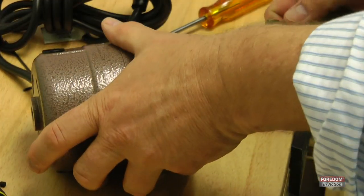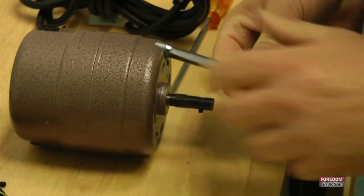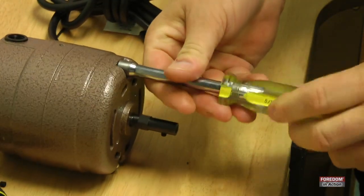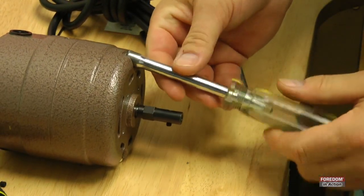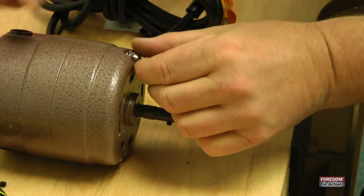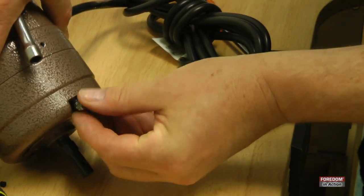Then what you need to do is remove the nut, the acorn nut here. Be careful, you might have a couple of washers.